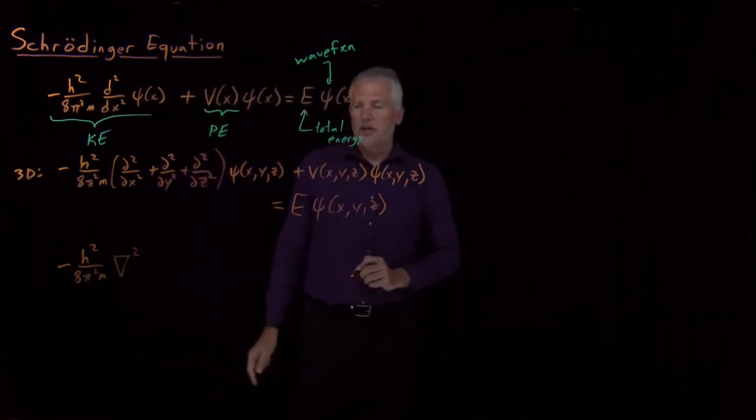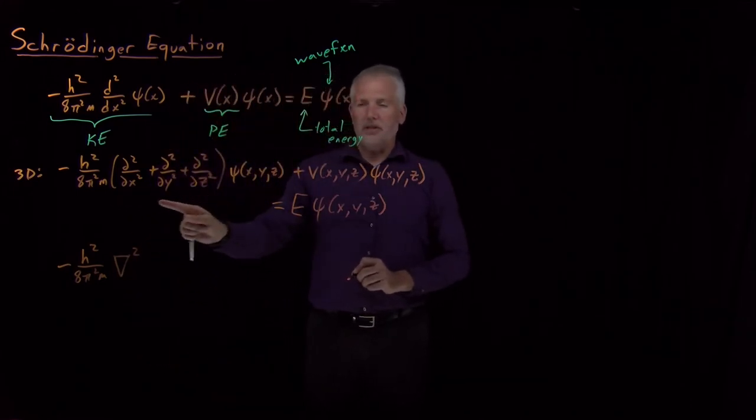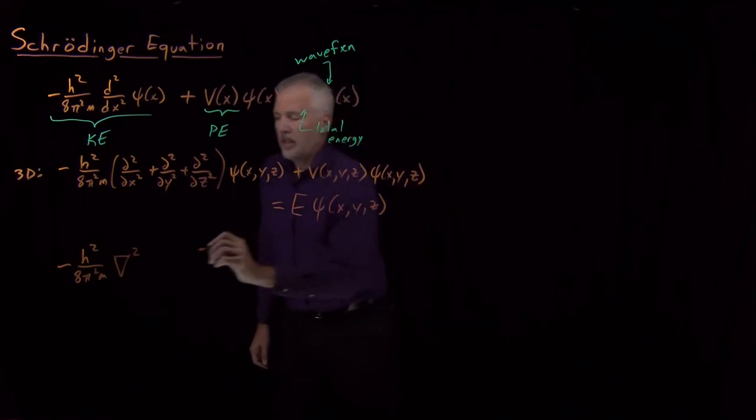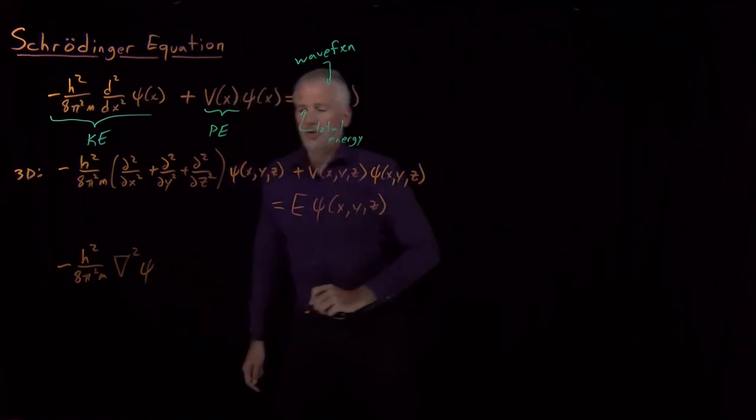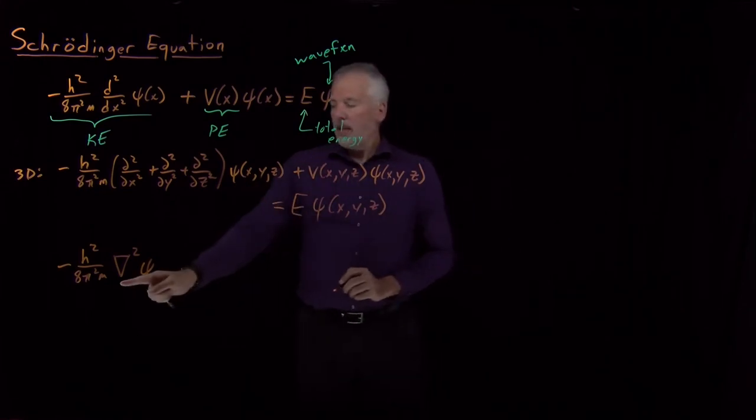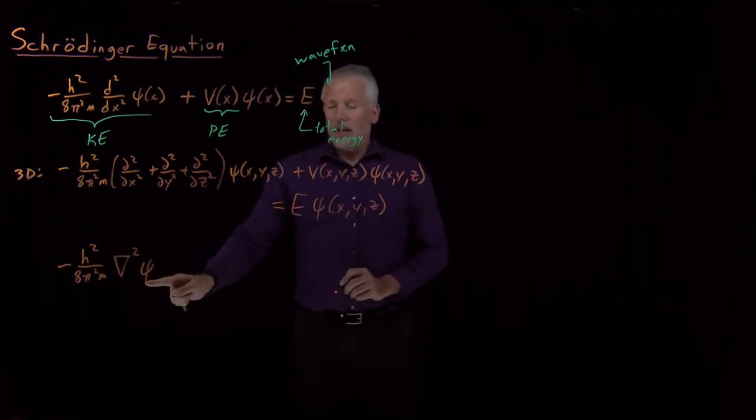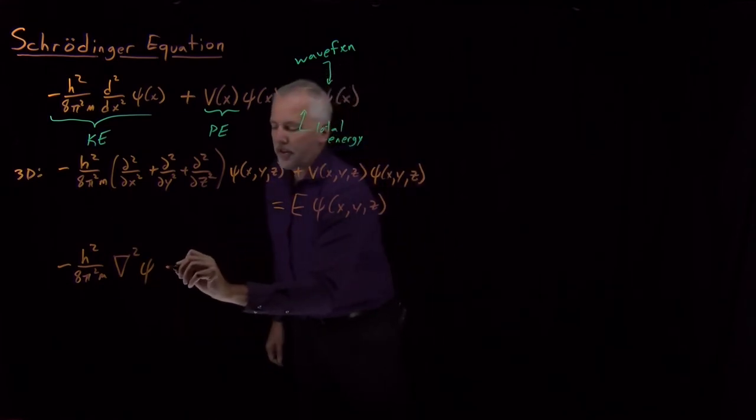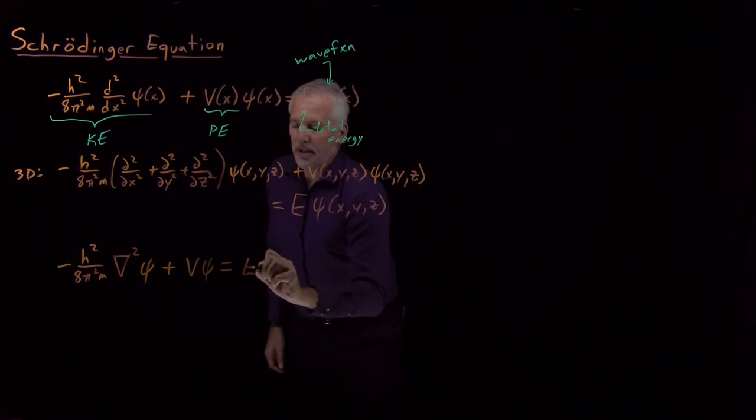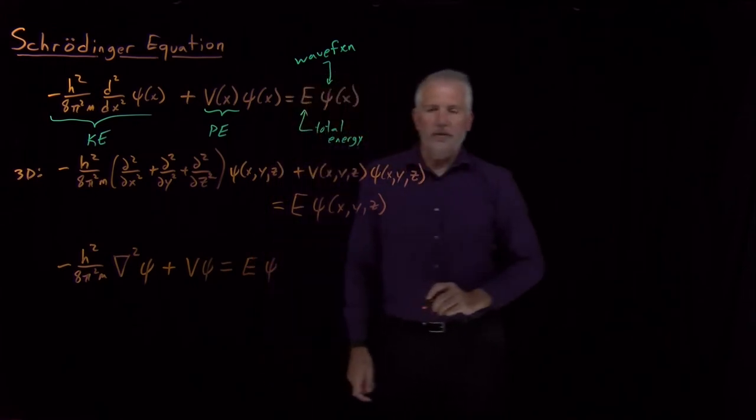We often, as a shorthand, just write ∇² to represent this sum of the three second derivatives in the three Cartesian coordinates. If I continue using shorthand without bothering to write down what the wave function depends on, some constants times the Laplacian acting on the wave function, if I add that to the potential energy times the wave function, I have to get back the energy times the wave function.